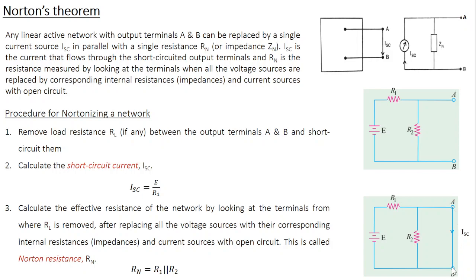The short circuit current is the current flowing between A and B. Current starts from the positive terminal, travels through R1, and reaches the junction where it has two options: flow through R2 or flow through AB. Since current always prefers the path of least resistance, and this path through AB has no resistance, the entire current bypasses R2. Therefore the total resistance experienced is R1, and Isc = E / R1.